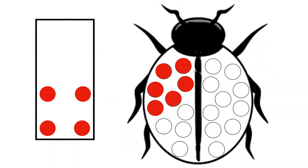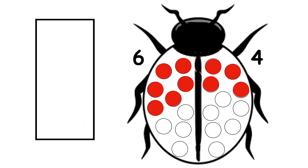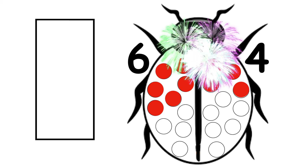Ladybird has 6 spots. 1, 2, 3, 4, 5, 6. How many more does she need to make 10? 1, 2, 3, 4. 6 and 4 make 10.